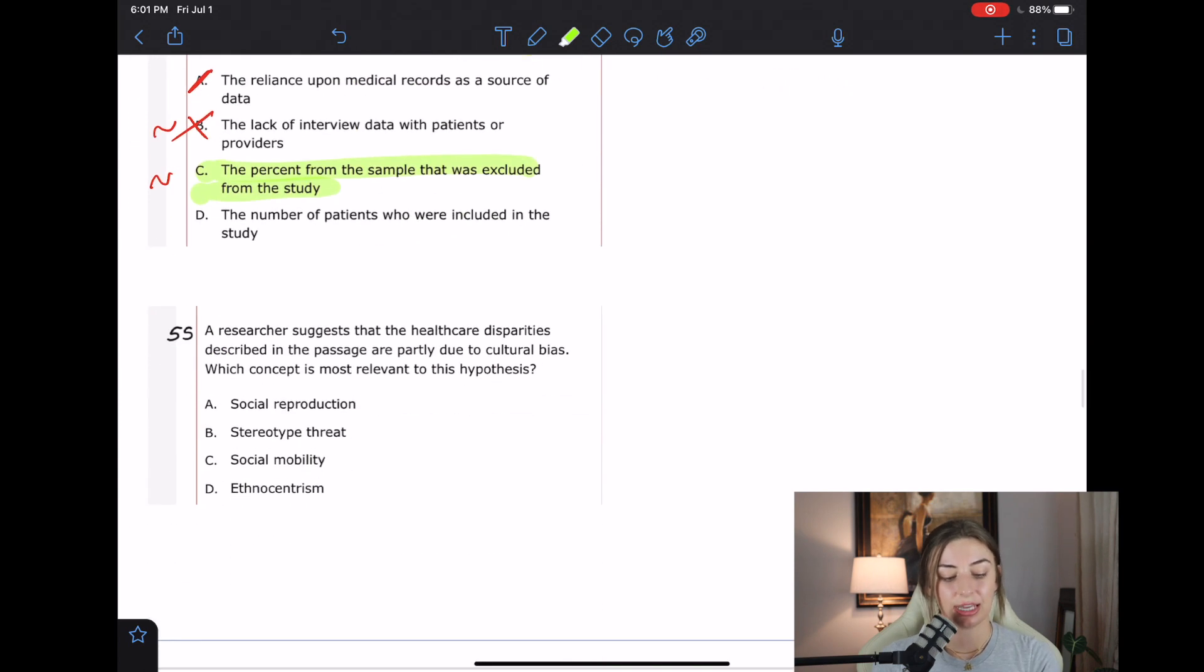55, a researcher suggests that the healthcare disparities described in passage are partly due to cultural bias. Which concept is most relevant to this hypothesis? So I guess this could be saying that maybe if the healthcare providers were a certain race, that they had a cultural bias against other races or something like that, or the same for gender, because there was a slight difference with gender as well. So basically which of the following concepts would relate to that? A says social reproduction. So that's not necessarily involved in like bias or anything like that. So I'm not loving it. B says stereotype threat. So that's when a stereotype can kind of cause a self-fulfilling prophecy and you can actually act out the stereotype threat.